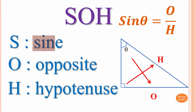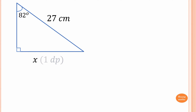Sin(θ) = O/H. Now with this triangle, we want to find the value of x to one decimal place. The angle 82° is given. Opposite this angle we label O. The 27 centimeters is the hypotenuse because it's the longer side and opposite the right angle, so we label it H.